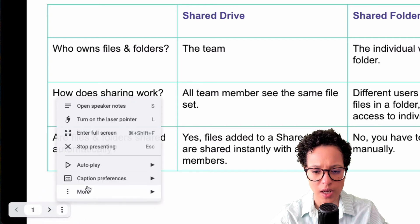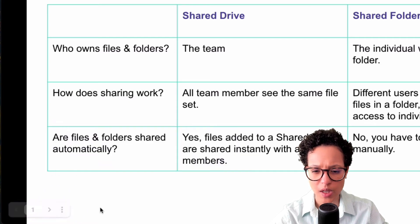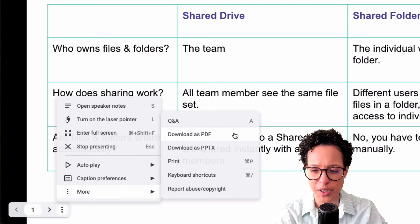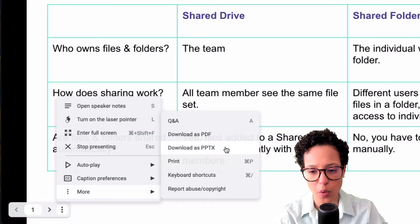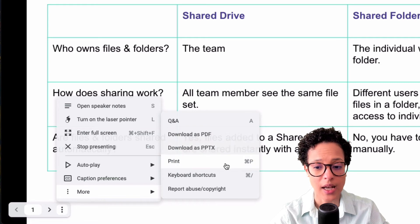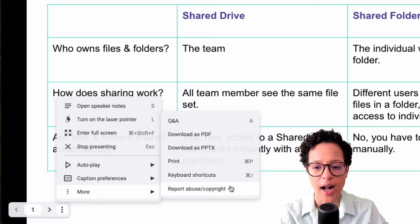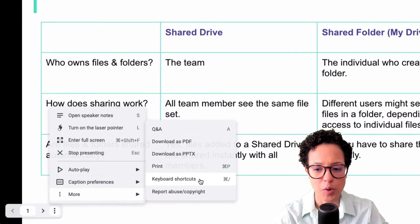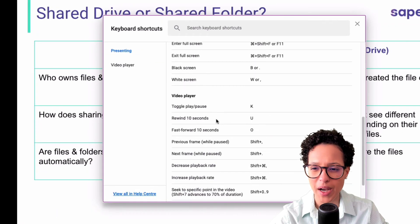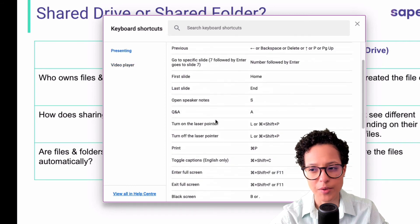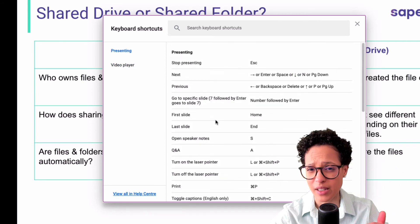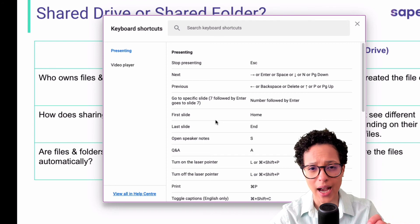Clicking on more options and then on more, I could download this specific slide deck as a PDF document or as a PowerPoint, or I could print it. There's also access to keyboard shortcuts. Almost all of the Google apps have quite an extensive list of keyboard shortcuts, which you can usually access through Help and then Keyboard Shortcuts.